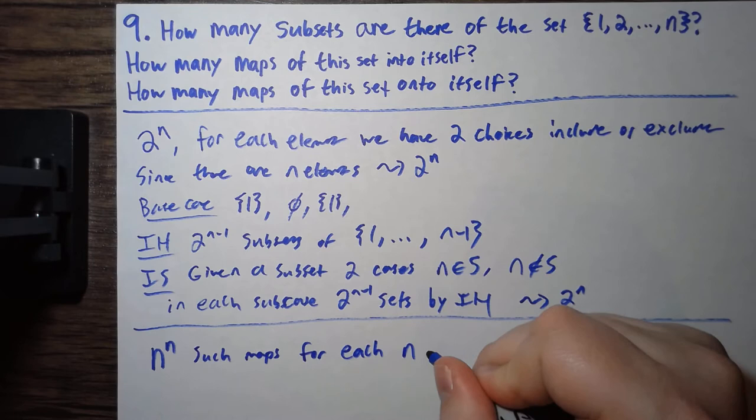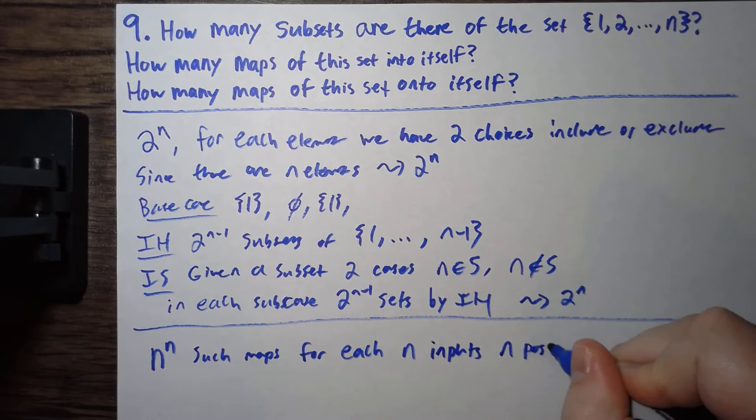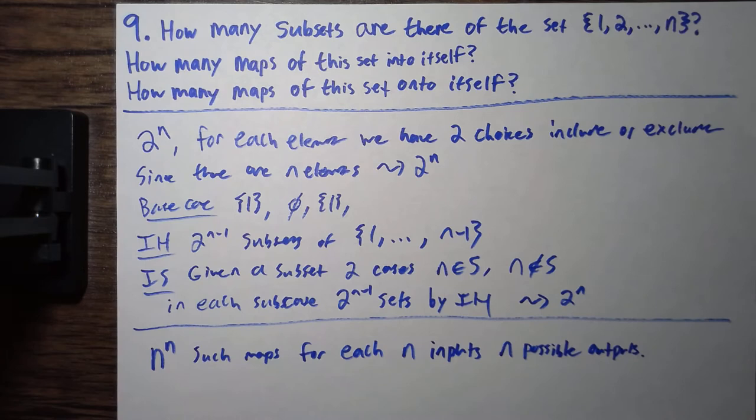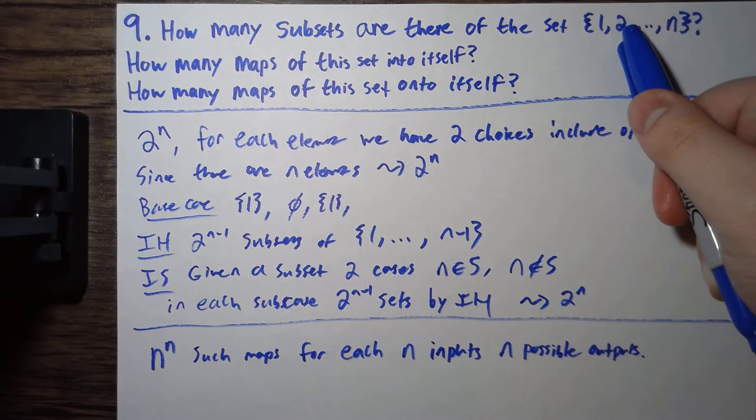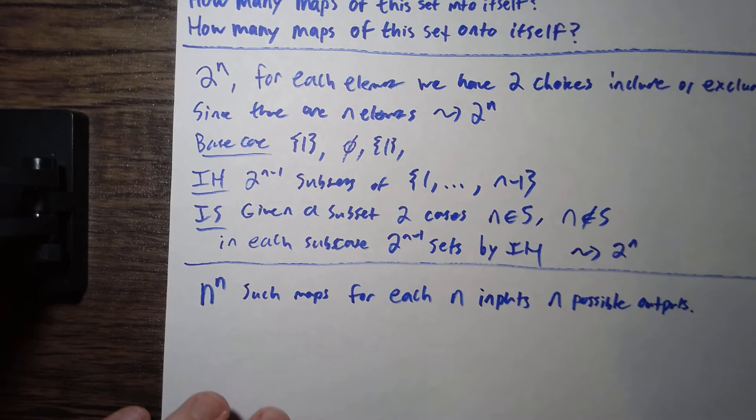The idea is, for each n inputs, you have n possible outputs. So, 1, you have n choices to send it anywhere you want, 2, you have n choices to send it anywhere you want, and so on. So, there's going to be n to the n such maps.